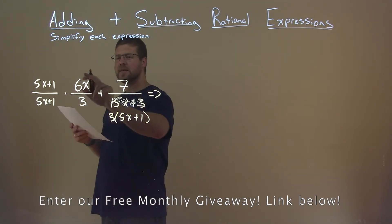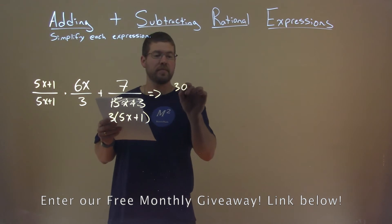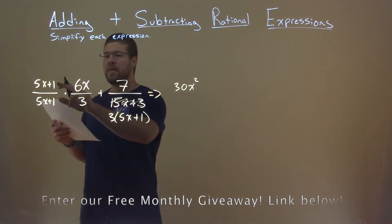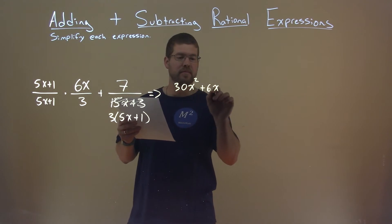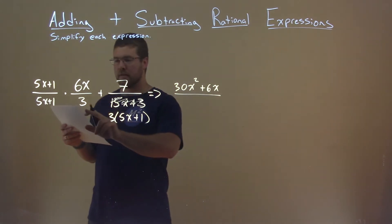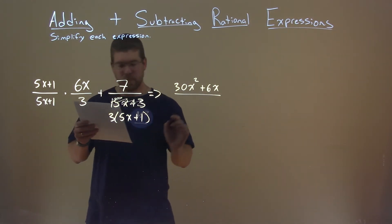So what does that come out to be? Well, 5x times 6x is 30x squared, and then 1 times 6x is 6x. Over that denominator, 3 times 5x plus 1, like this.